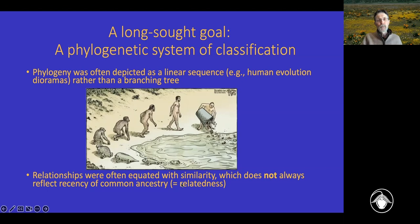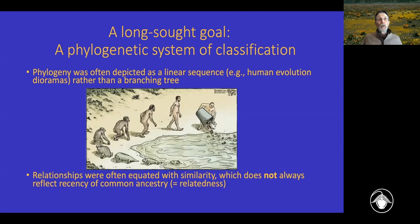Relationships were often equated with similarity, and the terms 'related to' and 'similar to' were used interchangeably. That was the basis for a lot of taxonomies — grouping things by overall similarity. But unfortunately, overall similarity doesn't always reflect recency of common ancestry, which is by any criterion the true definition of relatedness. Just because you look more like one of your first cousins than one of your siblings doesn't mean you're more closely related to your first cousin. The same is true in comparing species.